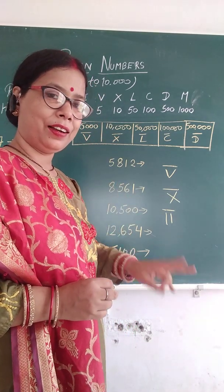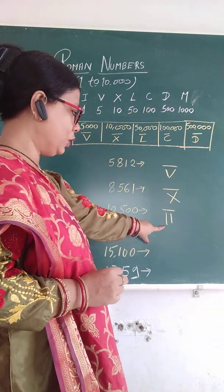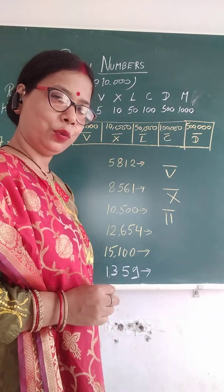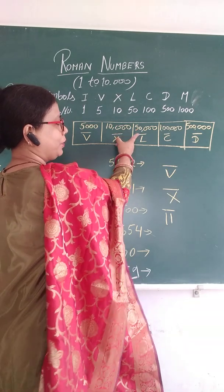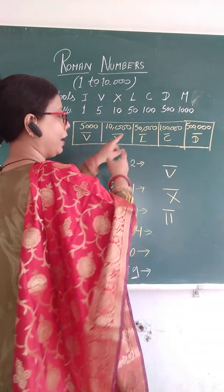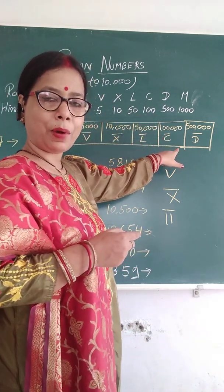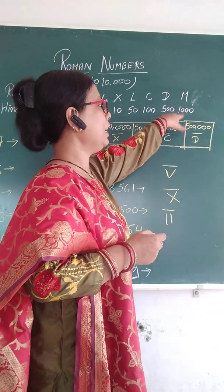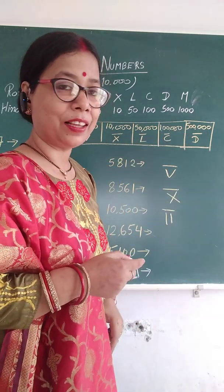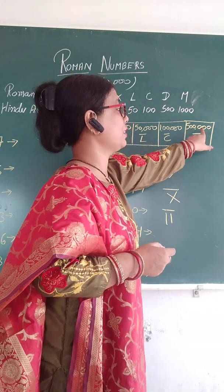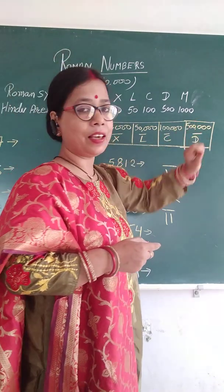So one thousand is M, and two lines on top means two thousand. L with a bar on top means fifty thousand. C with a bar on top is hundred thousand. D with a bar on top is five hundred thousand. So the scale goes: 1, 2, 100, 1000, 10,000, 100,000, 500,000.